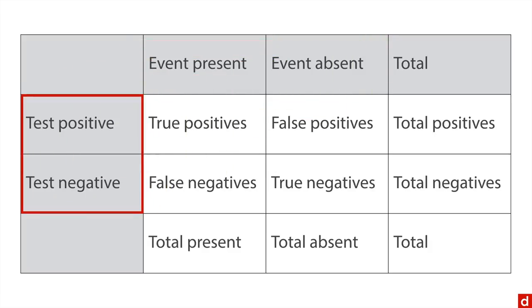On the left here is whether the test or the indicator suggests that a thing is or is not happening. And then you have these combinations of true positives, where the test says it's happening and it really is, and false positives where the test says it's happening but it's not.